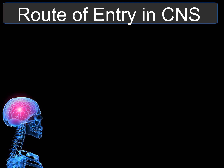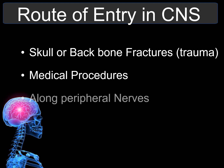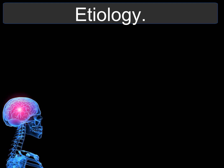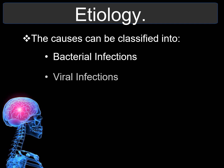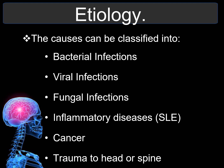There are routes of entry into the central nervous system: skull or backbone fractures causing trauma, medical procedures, peripheral nerves, or the blood and lymphatic system. As for etiology, if the infection is due to a pathogen, the culprit might be a virus, bacterium, fungus, or protozoa. Causes can be classified into bacterial, viral, fungal infections, inflammatory diseases, cancer, and trauma to the head or spine.